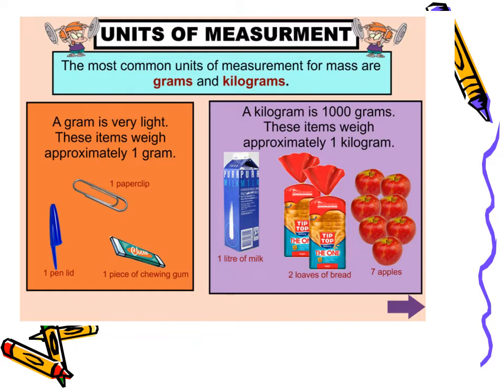What about the kilogram? A kilogram is 1000 grams. These items weigh approximately one kilogram. If you look at the seven apples, they weigh about one kilogram.